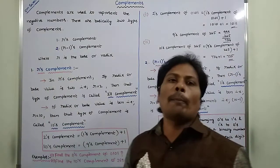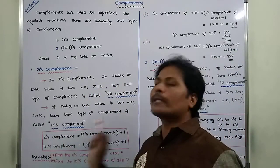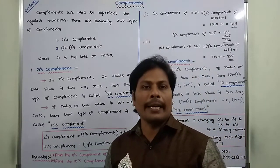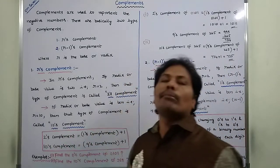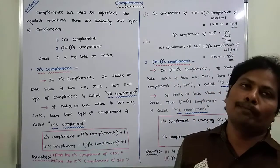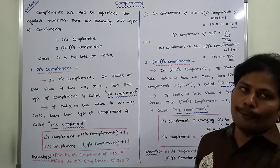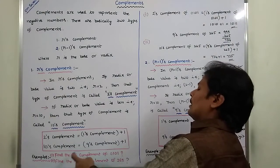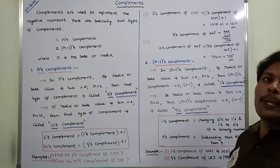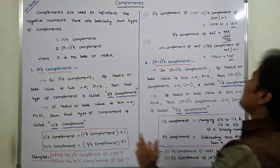Next, coming to R's Complement. If R is equal to 2, then it is called 2's Complement. How do we find out the 2's Complement of a given binary number? 2's Complement of a given binary number is equal to 1's Complement of the given binary number plus 1. So, 2's Complement equals 1's Complement plus 1. For example, how to find the 2's Complement of 0101: 2's Complement of 0101 equals 1's Complement of 0101 plus 1.